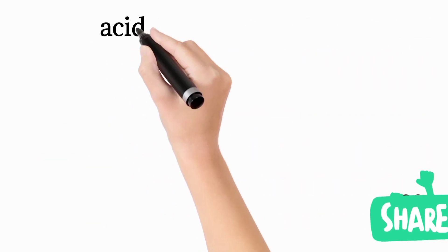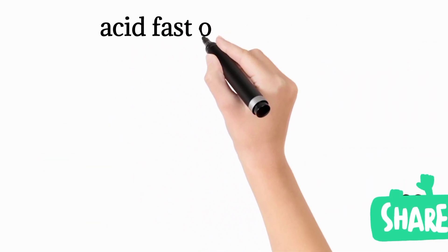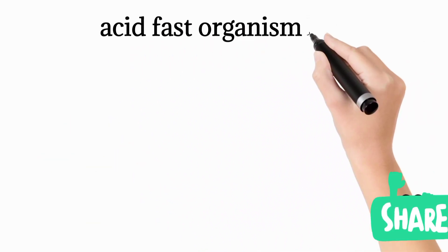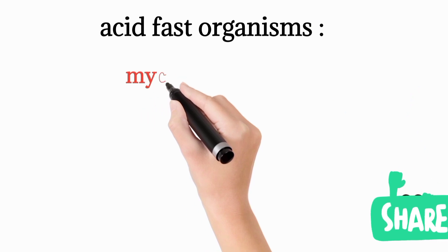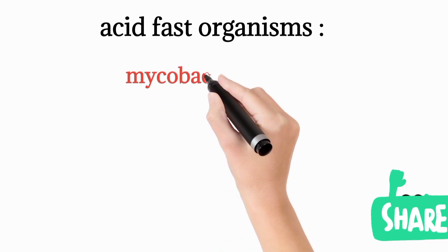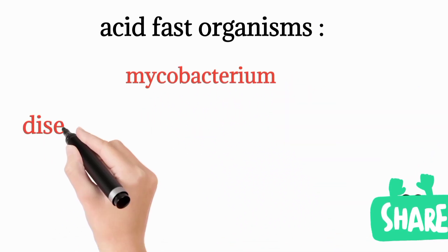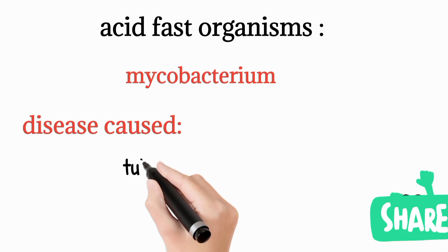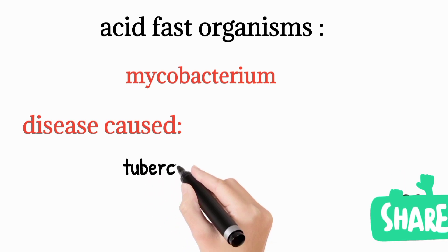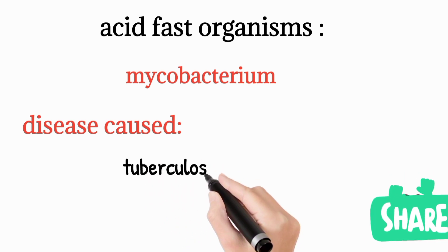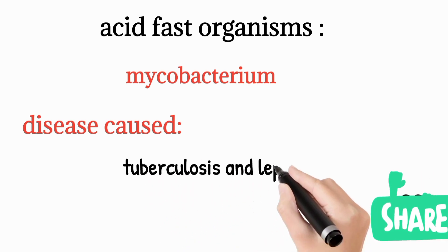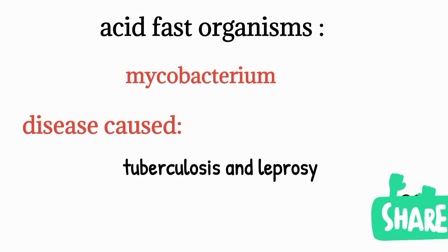Acid fast organisms — the best example being Mycobacterium tuberculosis — cause tuberculosis and leprosy. Tuberculosis affects the lungs and leprosy affects the skin.